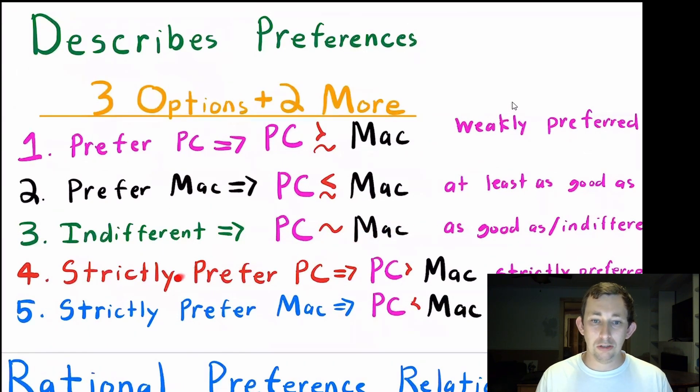We could also say that Bill's preferences are a little stronger, maybe he strongly or strictly prefers a PC to a Mac. And then we would just use the squiggly greater than. We could say that Bill strictly prefers a Mac, and we could say then that PC is this squiggly less than Mac, or again, that a Mac is strictly preferred to a PC.